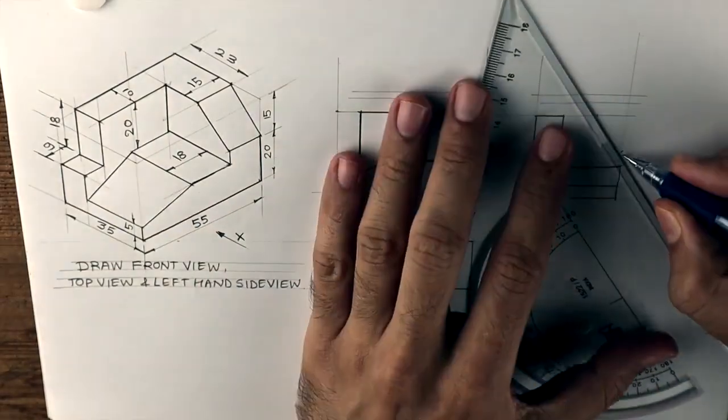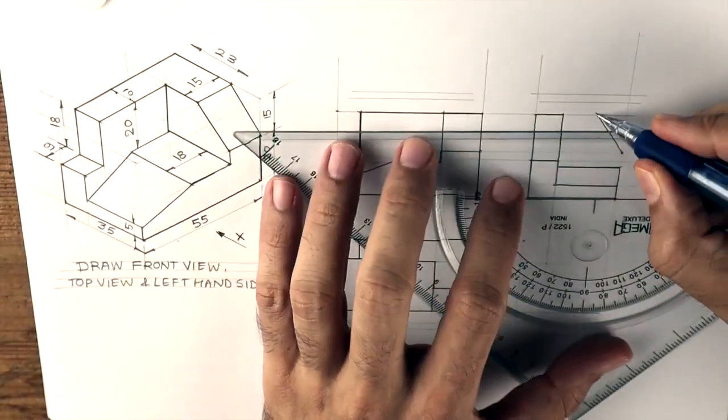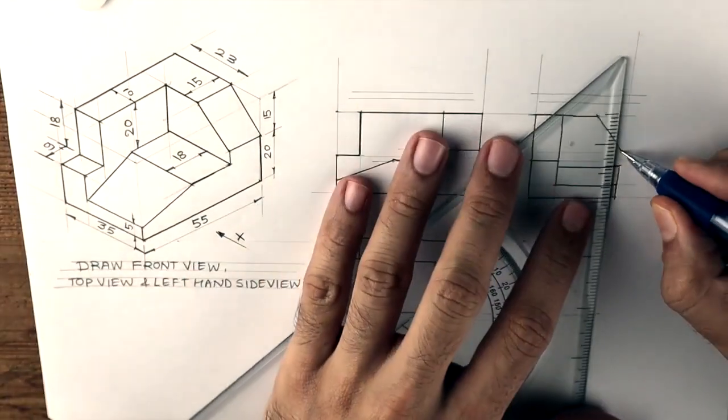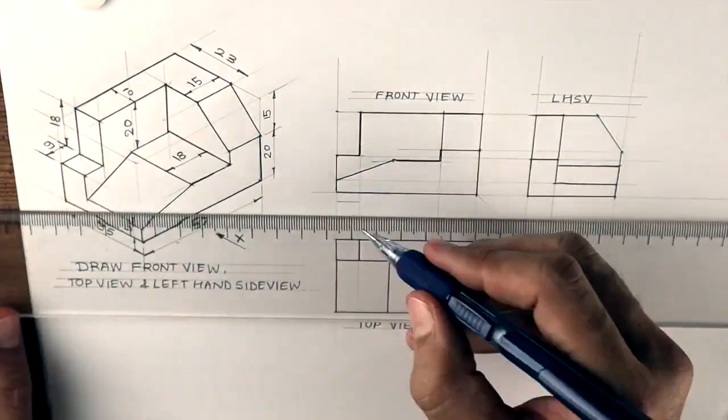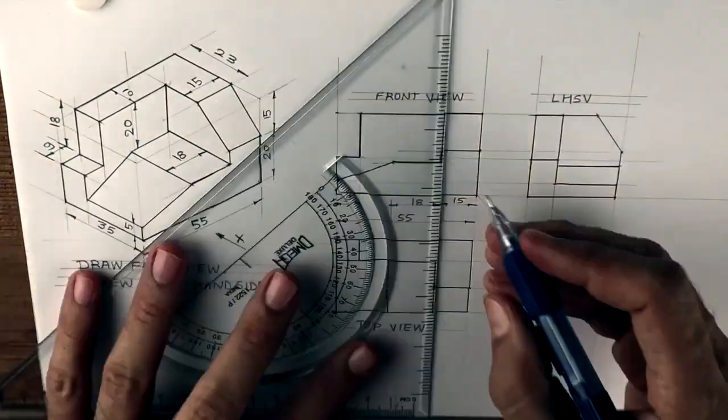Then when you join, you'll get that side view. So we are done with orthographic of the sum. We can do labeling and dimensioning. Thank you.